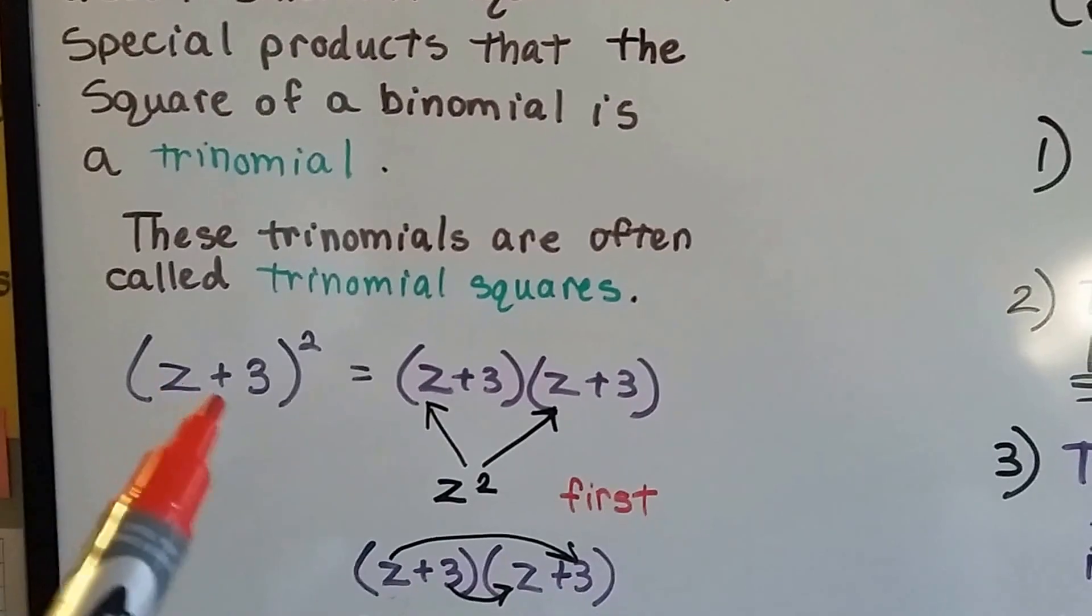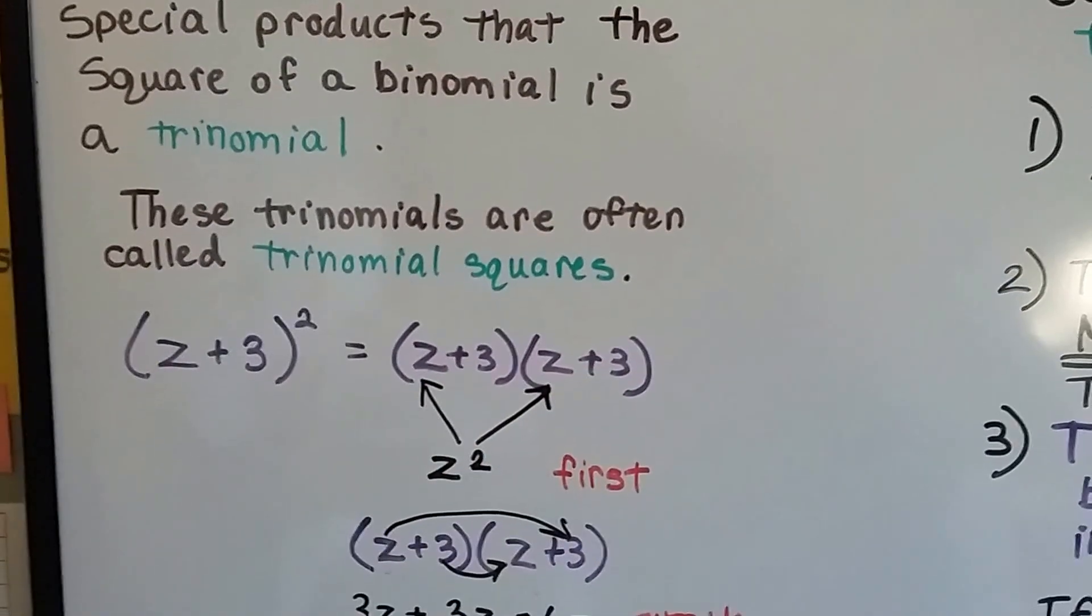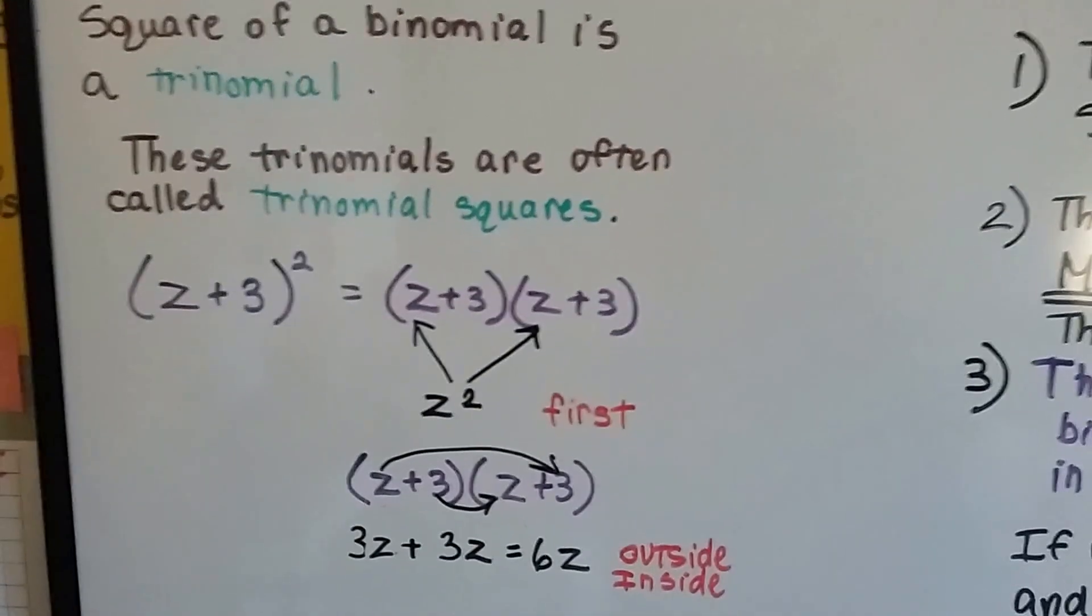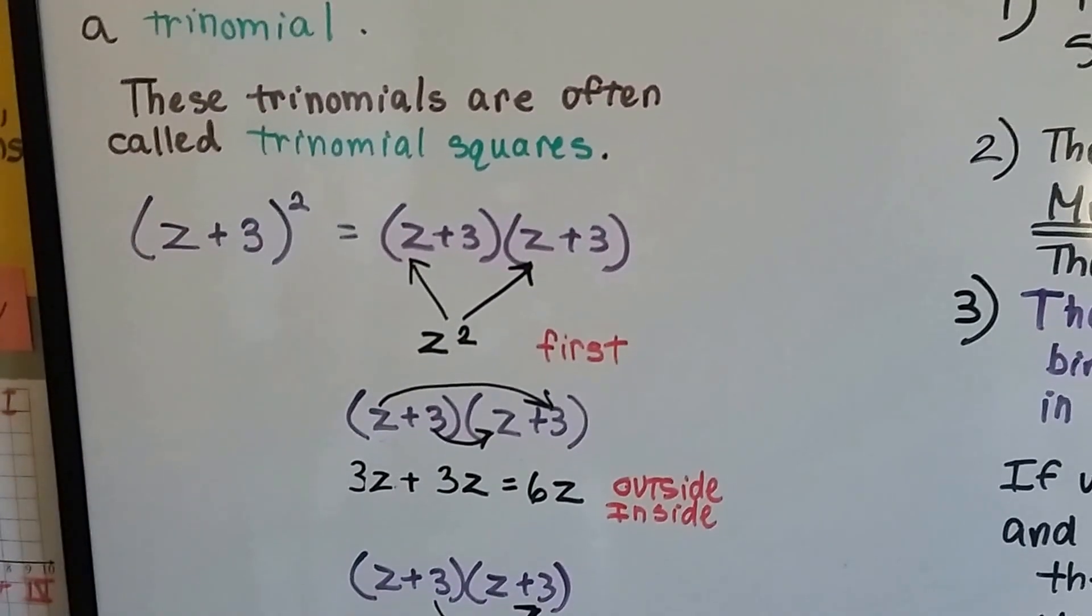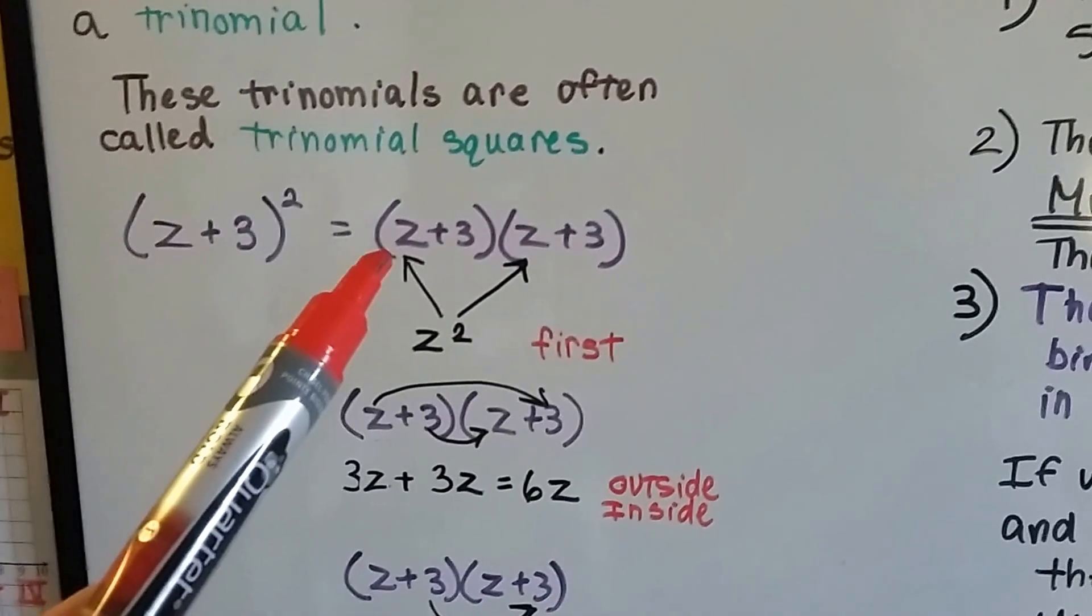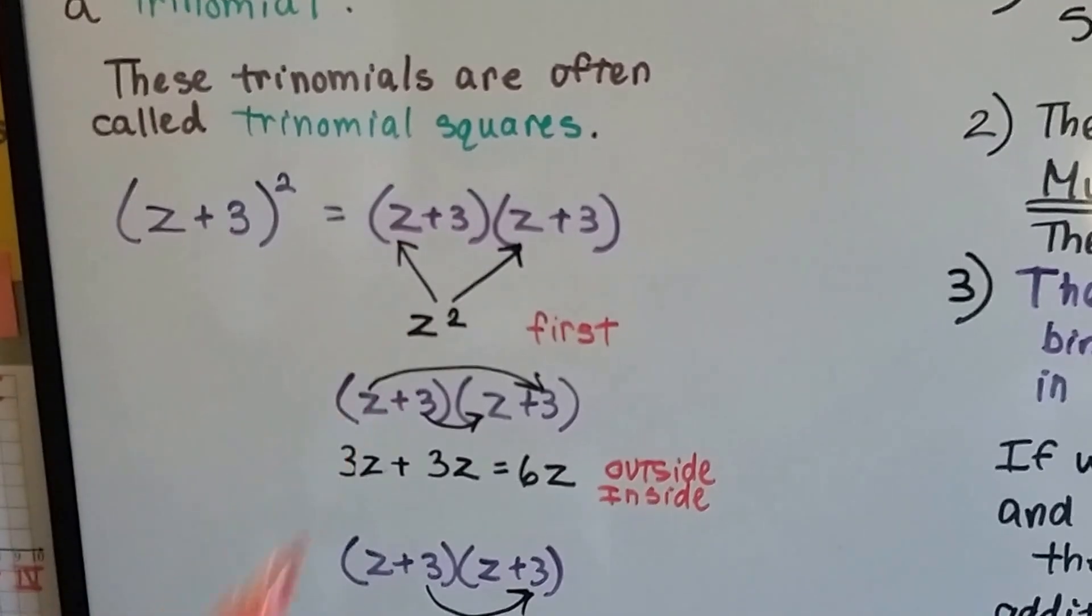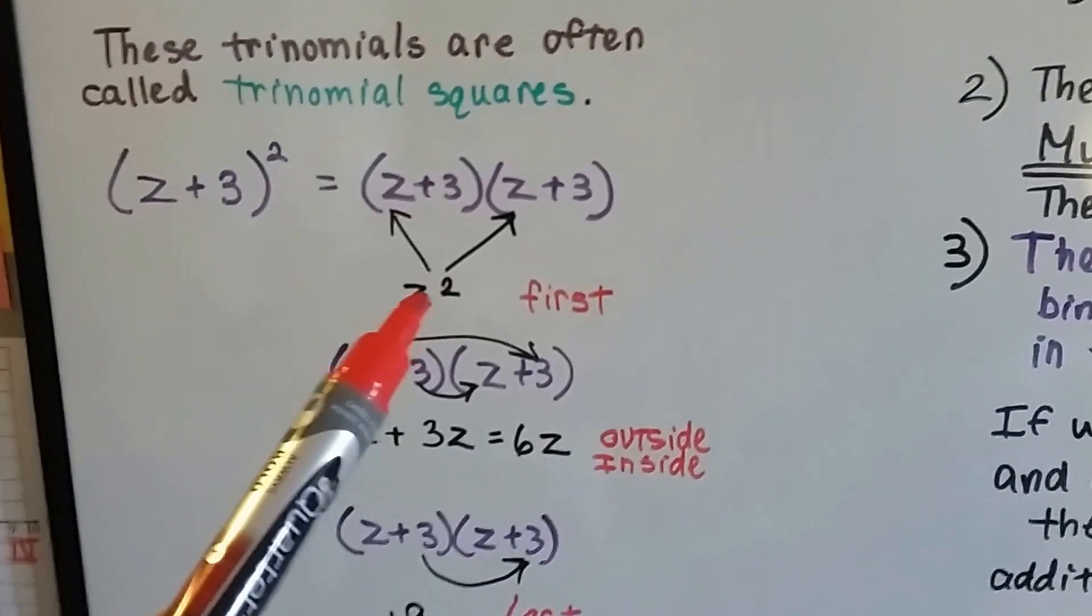We can open this up as (z+3) times (z+3). When we do FOIL, first, outer, inner, last, we multiply the z times the z and we get z squared. So that's multiplying the first terms.